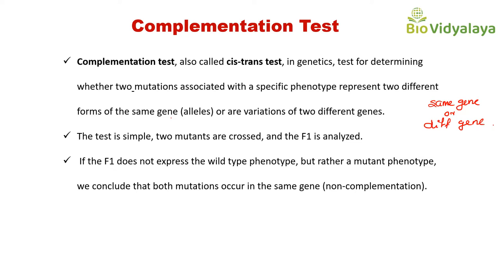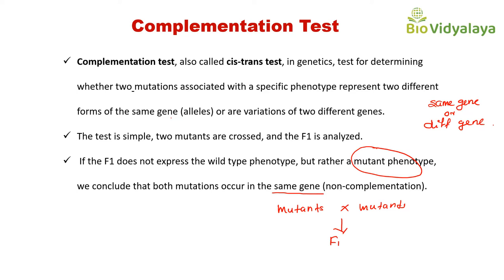The test is simple. Two mutants are crossed and the F1 progeny is analyzed. If the F1 does not express the wild type phenotype but rather a mutant phenotype, we can conclude that both mutations occur in the same gene. That means the mutations are non-complementing — this is non-complementation.